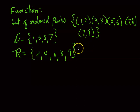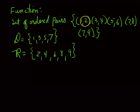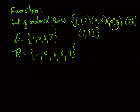Is that set of ordered pairs a function? The rule is that each domain element is assigned a range element. Does 1 get more values besides 2? No. Does 3 only get 4? Yes. Does 5 only get 6? Yes. But 7 is assigned both 8 and 9, so this is not a function — it's just a relation.